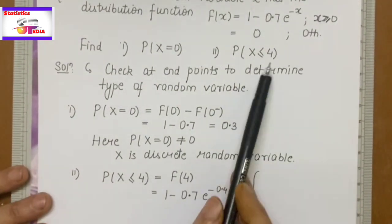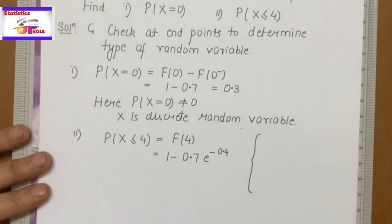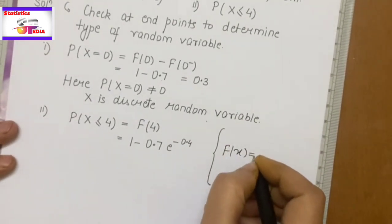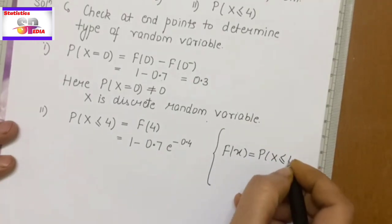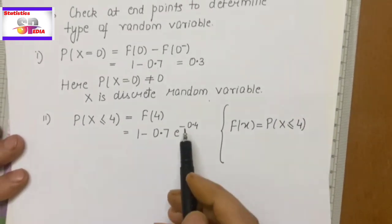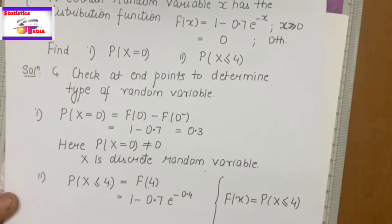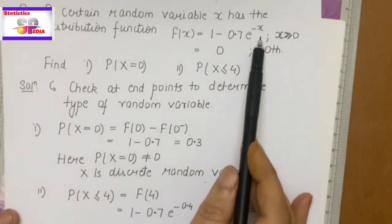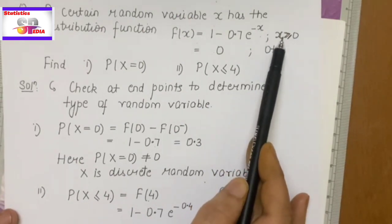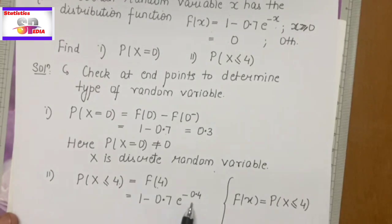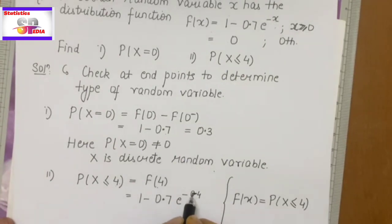Now, what is next? We have to find P(X ≤ 4). By the definition of the CDF, P(X ≤ 4) equals F(4). Since x ≥ 0 in the domain, here x = 4, so we simply put the value of the function at 4.